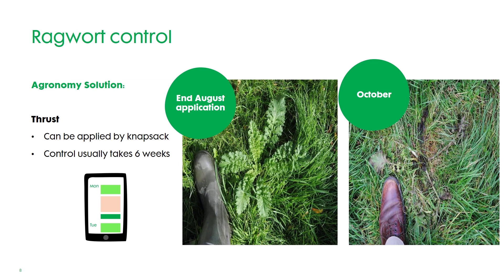These herbicides are very effective — you can see here that a ragwort rosette treated at the very end of August is dead by early October. It has killed the root and almost disappeared. It does take this sort of length of time, around six weeks, to kill ragwort. The Thrust product can also be applied by knapsack, so if you have a low population you can go around spot treating the rosettes in the autumn.